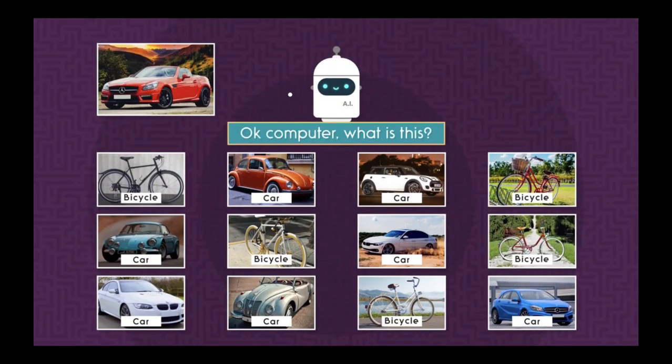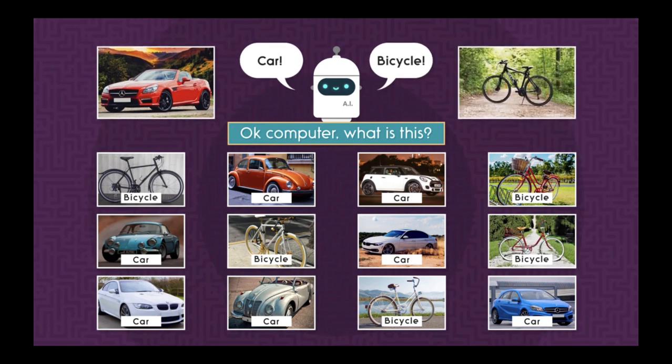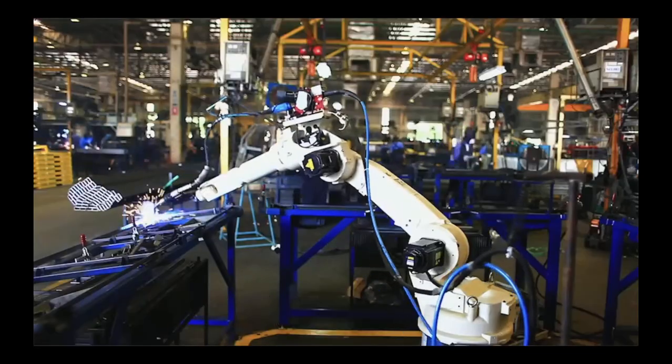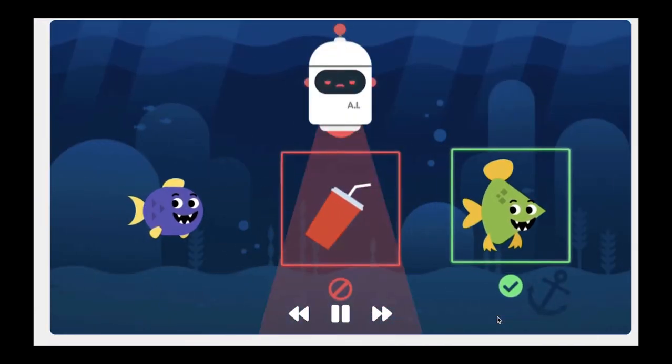Once the machine learns to recognize patterns in the data, it can also learn to make predictions based on those patterns — like noticing the difference between an image of a car and an image of a bicycle. AI and machine learning are playing a bigger and bigger role in society, shaping all of our futures. That's why it's so important to learn how it works. With some hands-on experience, you're about to get the chance to train your own machine learning model. AI is like any tool: first you get the knowledge, then you get the power.